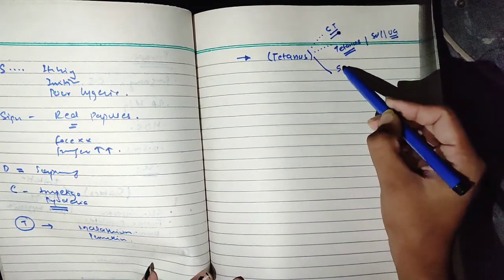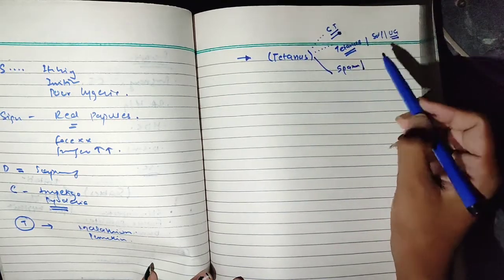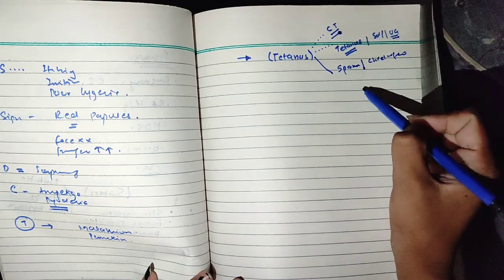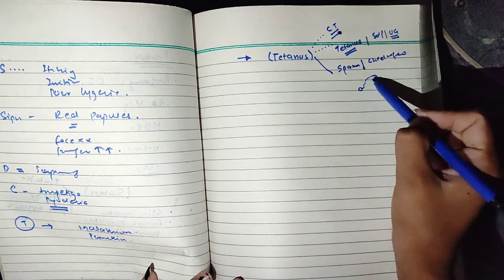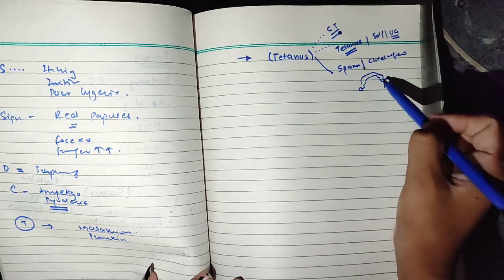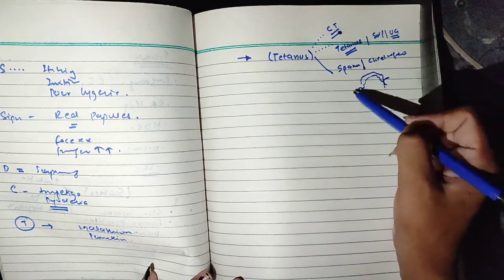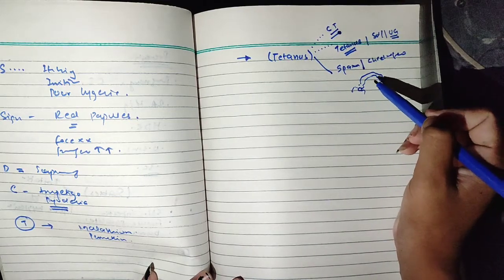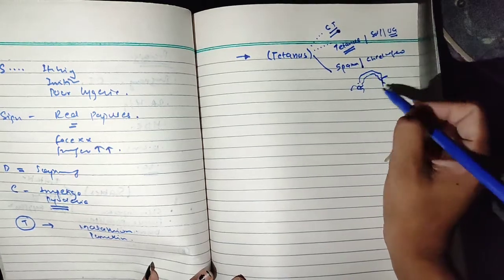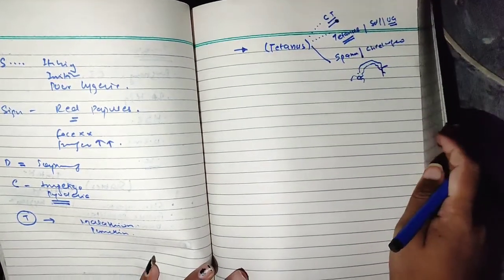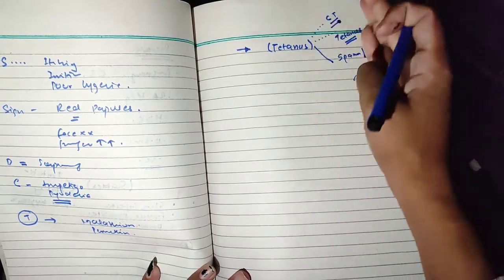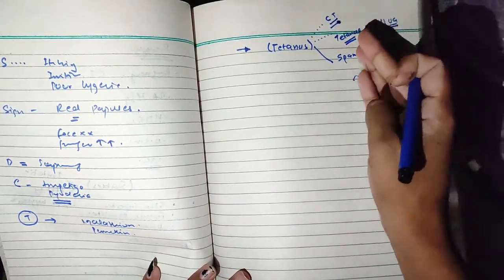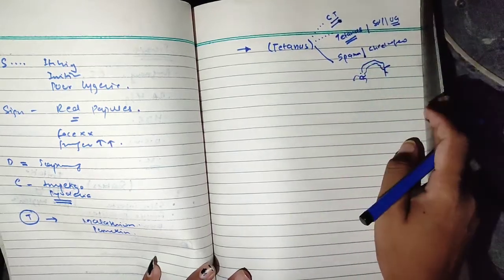What happens in tetanus? The jaw and muscles start with spasm. The cheeks and face muscles also become spastic. Sometimes there's a condition called opisthotonos, which is a back arc. So we call this opisthotonos. Tetanus is usually due to unhygienic conditions during delivery, soil, trauma, etc., and what happens is spasm, opisthotonos, etc.